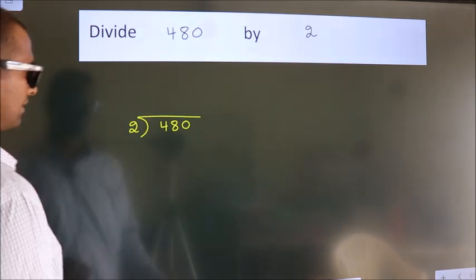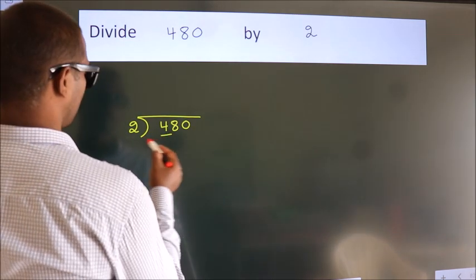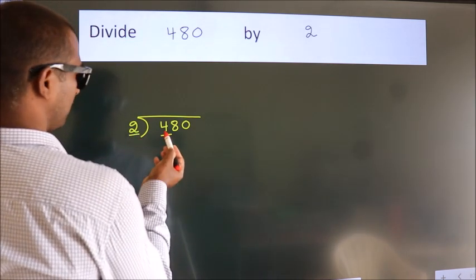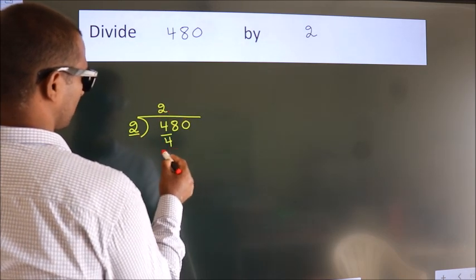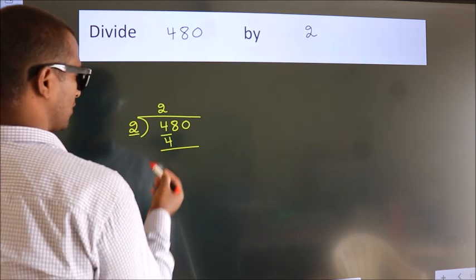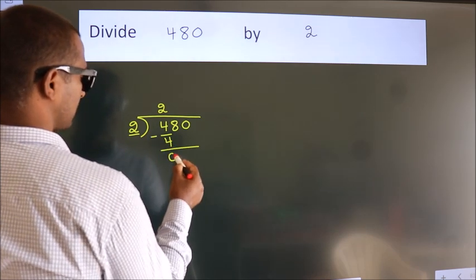Next. Here we have 4, here 2. When do we get 4 in 2 table? 2 2's, 4. Now, we should subtract. We get 0.